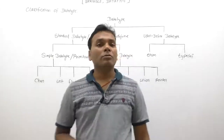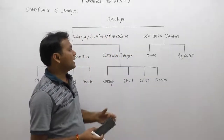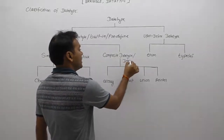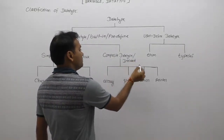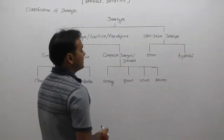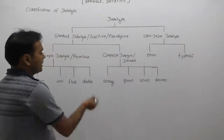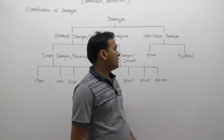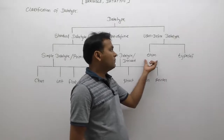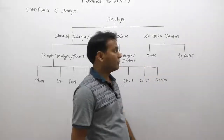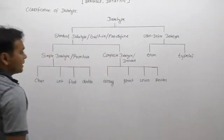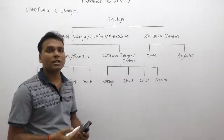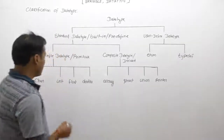Composite data types are also known as derived data types because they are created based on existing data types. User-defined data types are divided into two categories: enumerations and typedef. For composite data types, there are four types: array, structure, union, and pointer.